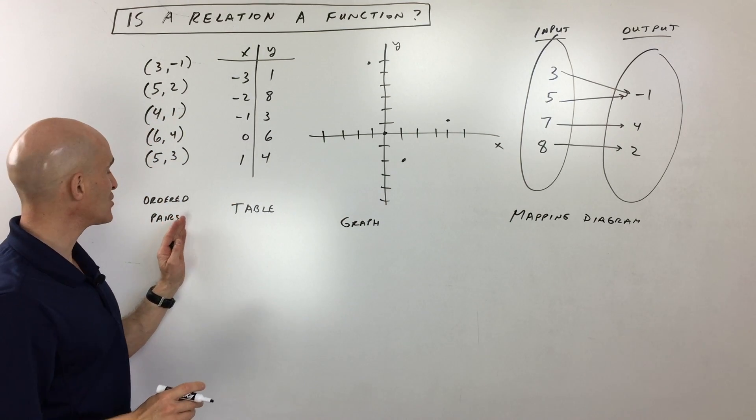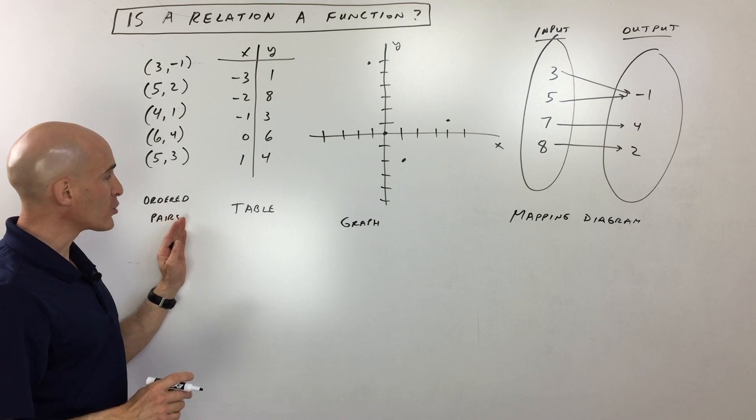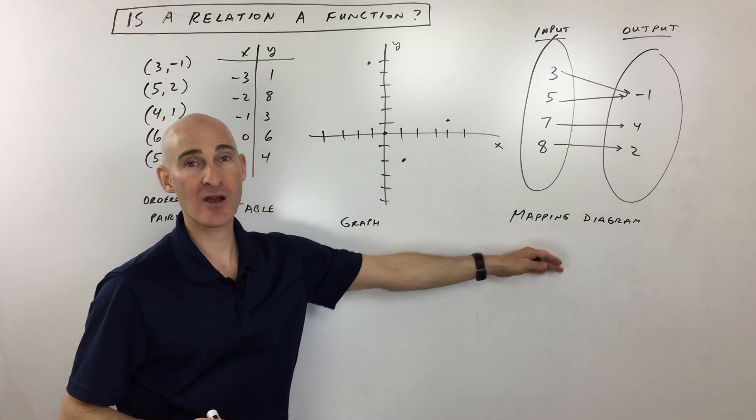So first of all, we can display these relations as ordered pairs, tables, graphs, mapping diagrams, et cetera.